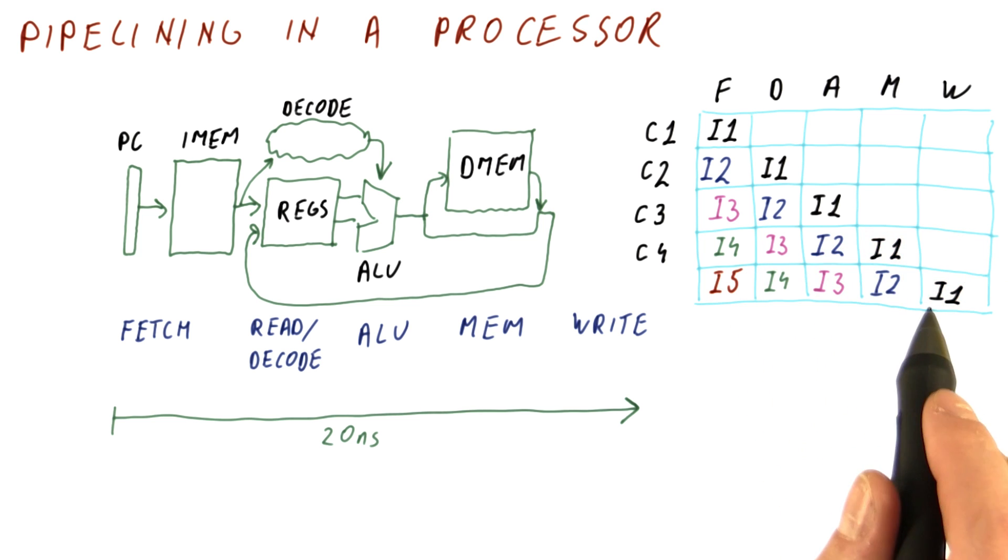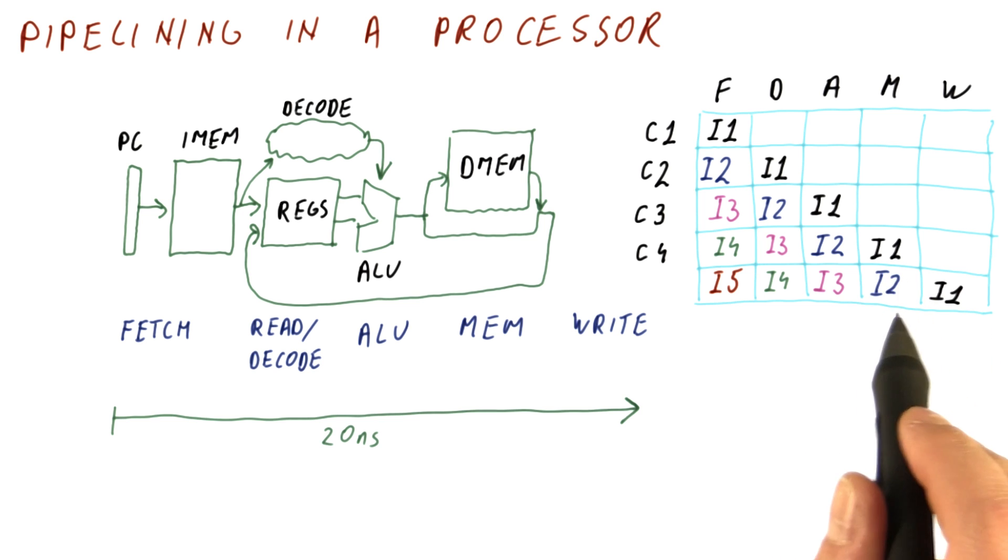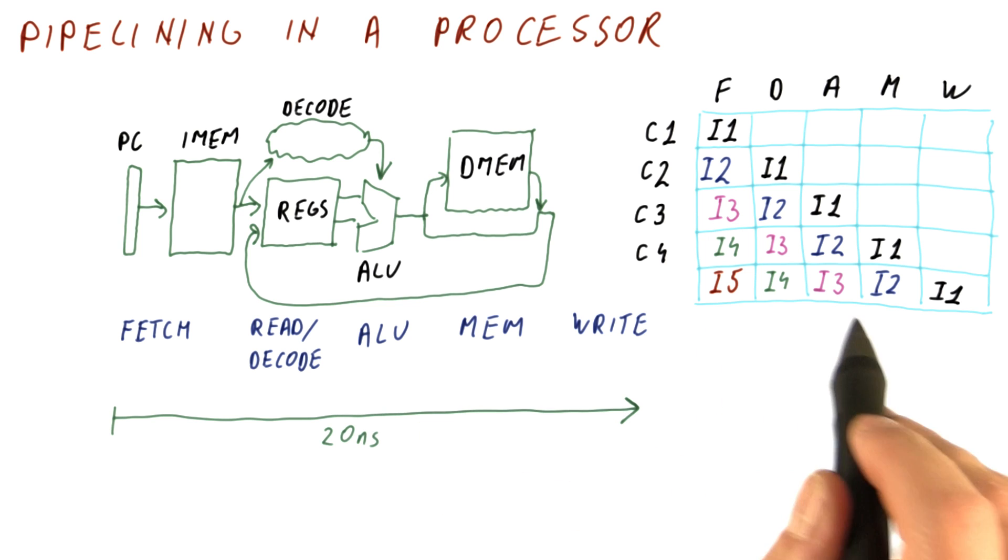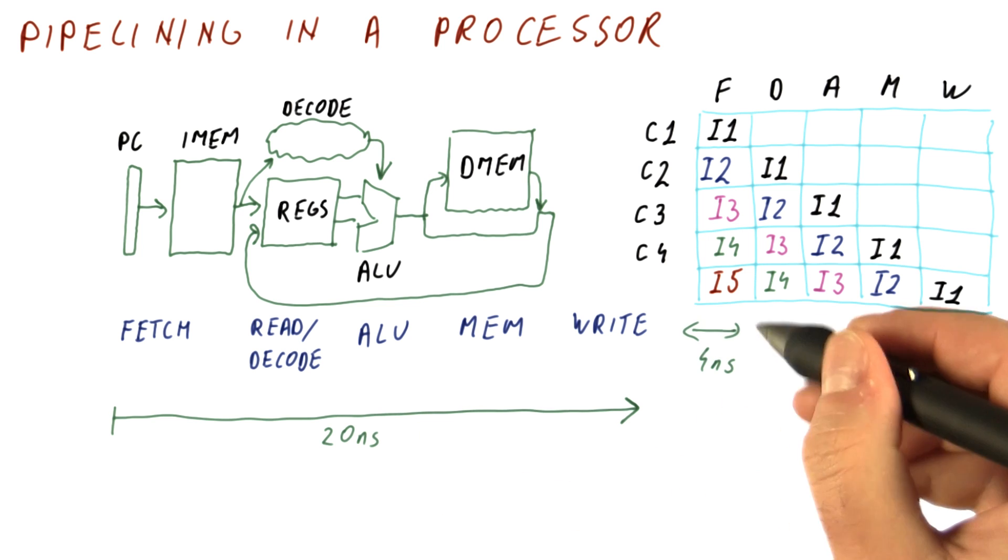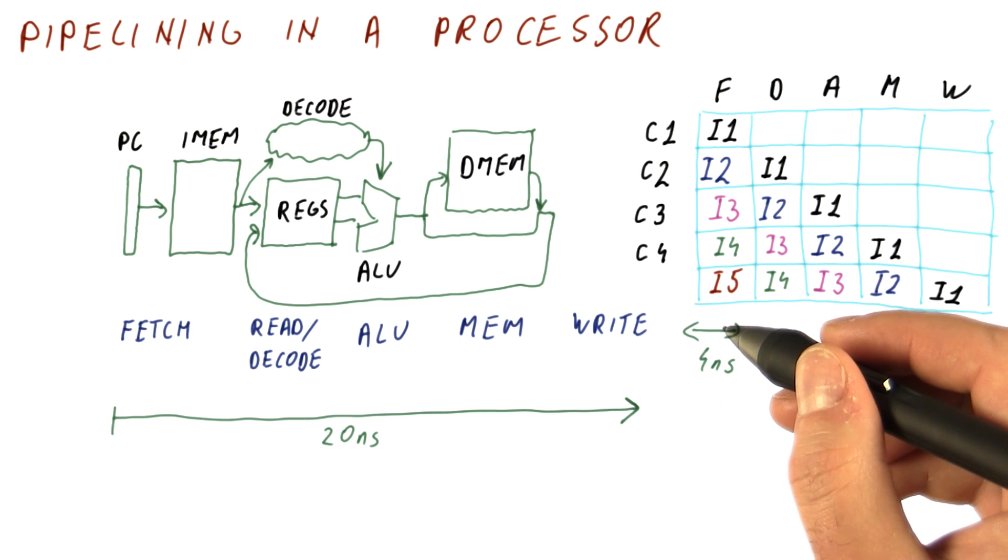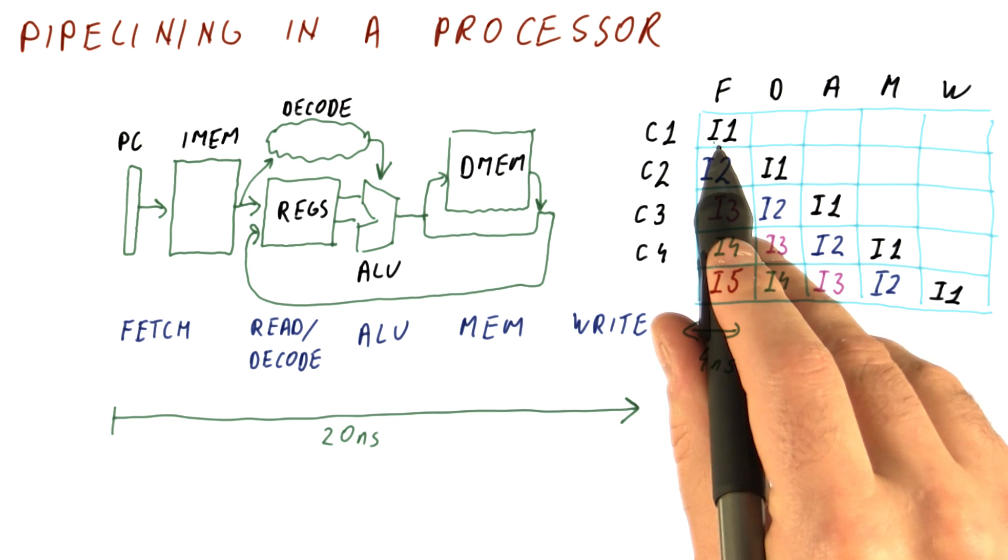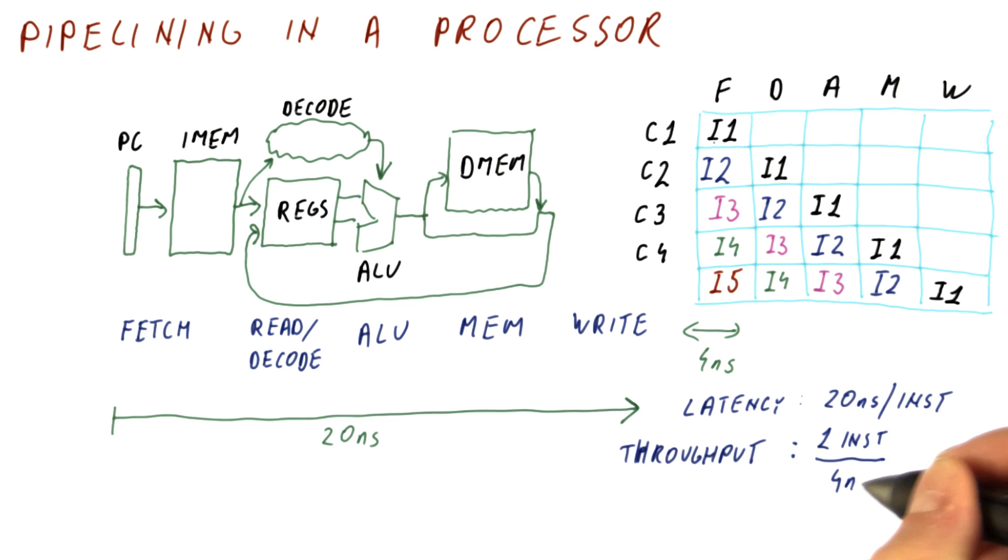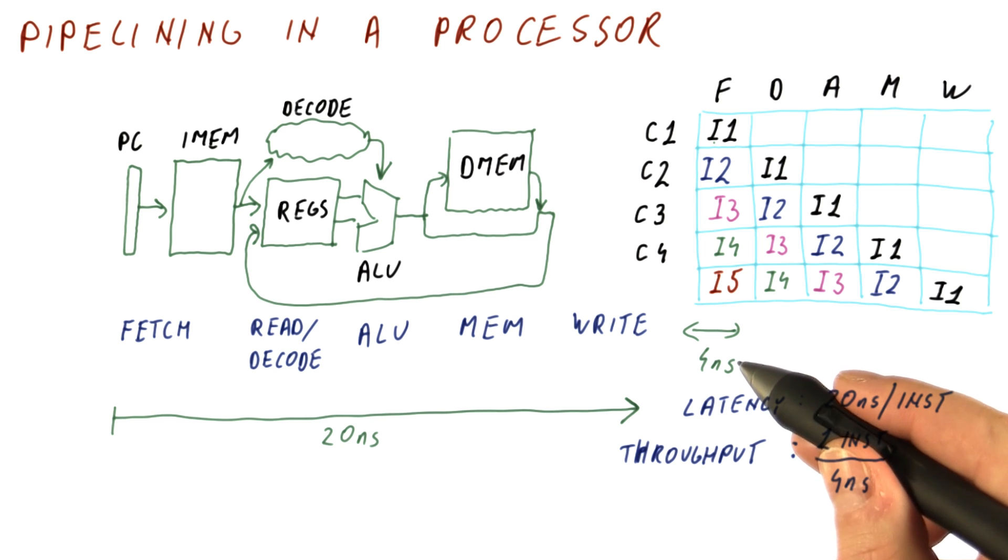So now the idea is that once I1 leaves the pipeline, very soon after that I2 will leave the pipeline. If we divide this 20 nanoseconds into five equal pieces for these stages, each stage will be four nanoseconds. Now the latency to do I1 is still 20 nanoseconds, so it takes 20 nanoseconds to do an instruction. But the throughput will be one instruction finishing every four nanoseconds.